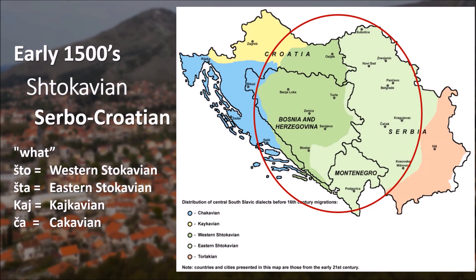The languages are divided among many dialects, named from the word for 'what.' As you can see in the picture, we have Štokavian Western, Štokavian Eastern, Kajkavian, and Čakavian. Since you are learning Bosnian, this is a great example — because you say 'šta' for 'what,' you know that Bosnian belongs to the Eastern Štokavian dialect.